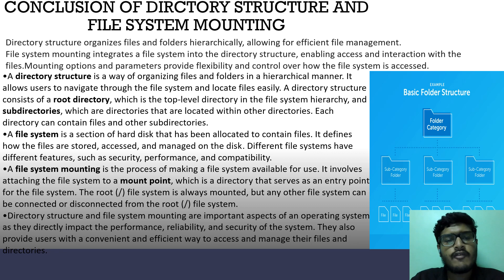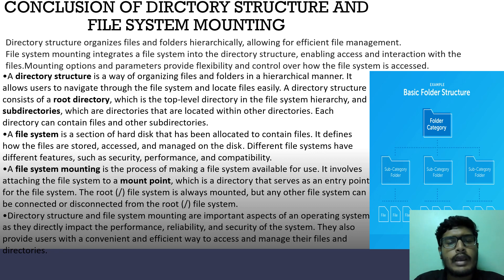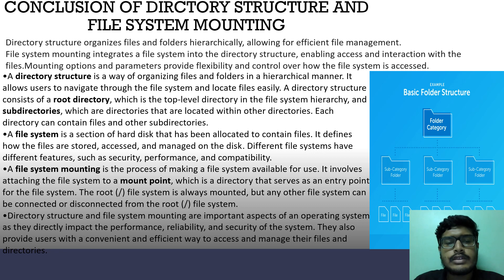Conclusion of directory structures and file system mounting. This is the example of a basic folder structure. Directory structure organises files and folders hierarchically, allowing for efficient file management. File system mounting integrates a file system into the directory structure, enabling access and interaction with the files. Mounting options and parameters provide flexibility and control over how the file system is accessed.